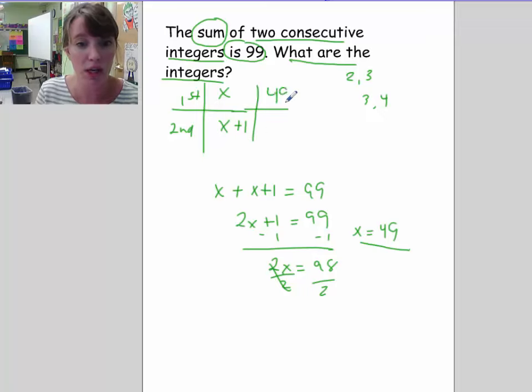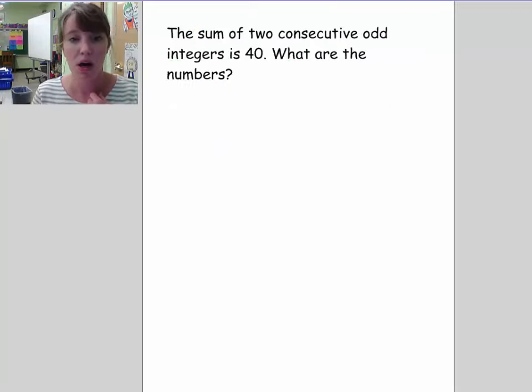So go back and fill in your chart. If x is 49, then the second number must be 50, which is what we said all along. Check, always check it. 49 and 50, the sum of those two numbers is 99. So we're good.